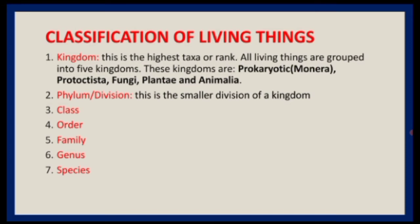The Order is a subgroup within a class — organisms in each order resemble each other more than those of the same class. For example, human beings and elephants are in the same class Mammalia but in different orders. Linnaeus's system shows that even though organisms may be classified under Kingdom Animalia, they have different structures, so we sort them further into class, family, order, genus, and species.